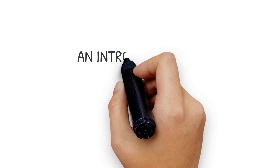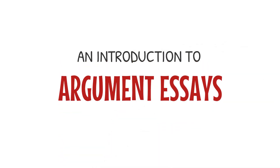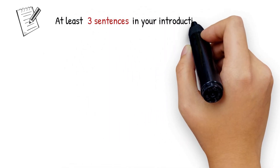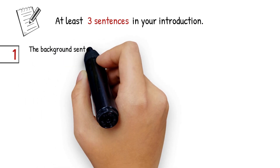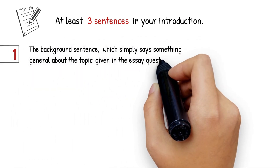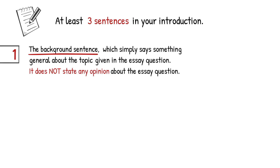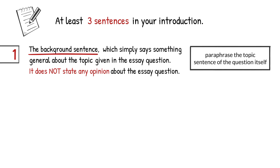First, let us focus on how to write an introduction to an argument essay. When writing an introduction to an argument essay, there should be at least three sentences. The background sentence simply says something general about the topic given in the essay question — it does not state any opinion. Usually something general about the topic is mentioned, and we can paraphrase the topic sentence of the question itself.